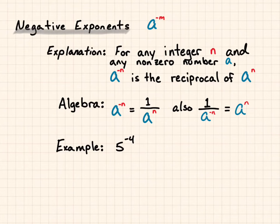Also, 1 over a to the negative n. If I want to make that a positive exponent, I put the power into the numerator. It becomes a to the positive n.